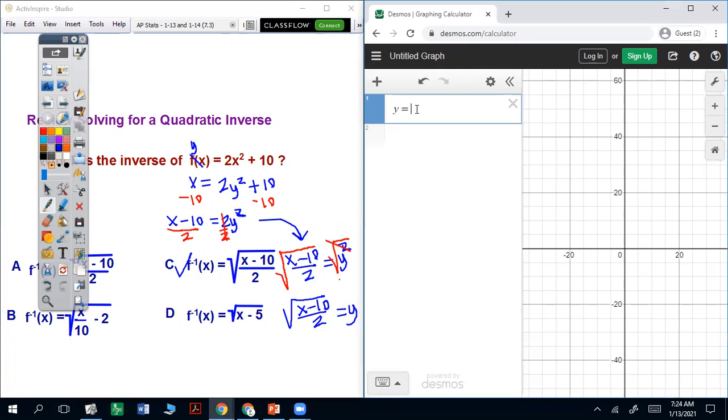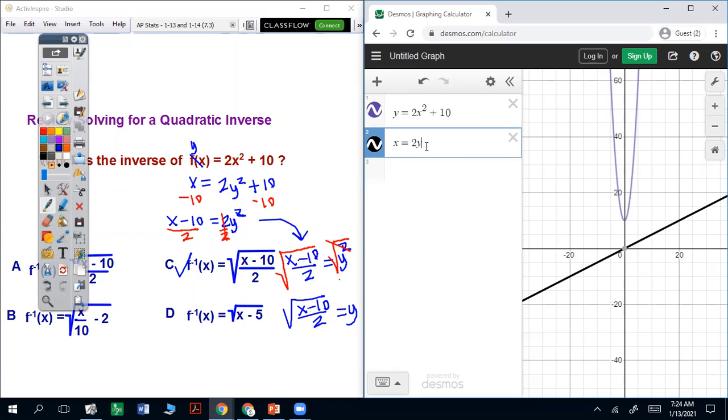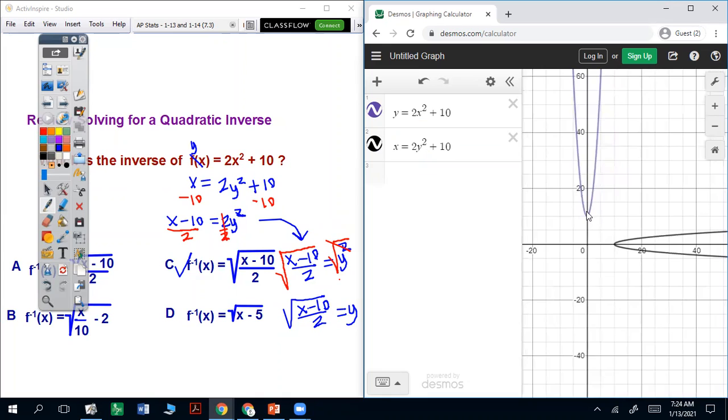So say y equals 2x squared plus 10. And then go down to the next line and reverse the x and y. So you can see what that sideways parabola looks like. Now, it's not restricted on the domain.